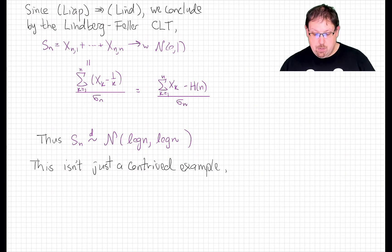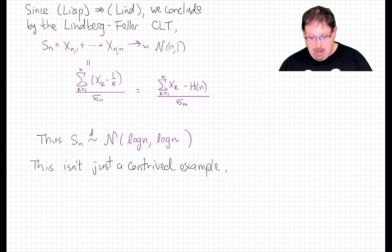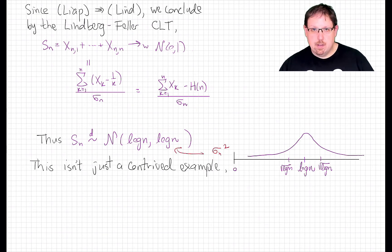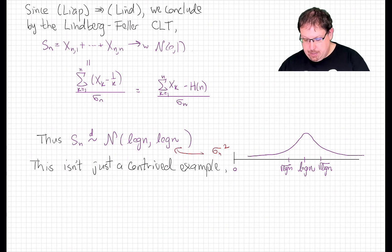which means that just the sum by itself is approximately a normal with mean log n and variance log n, since the variance there is sigma_n squared. So for large n, it's approximately a bell distribution centered at log n and with standard deviation square root of log n.